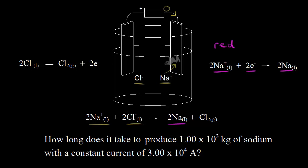The other half-reaction occurs at our other electrode, where the battery draws electrons away. So oxidation is occurring at this electrode — this would be the anode. Liquid chloride anions are oxidized to chlorine gas, losing two electrons. So chloride anions are oxidized to chlorine gas at the anode.